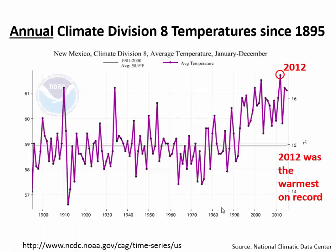What about temperatures? Here's a graph of the annual average temperatures in climate division eight since 1895. This graph starts from about 57 degrees and goes up to 61 degrees and a little higher. From 1895 all the way to 2015. On a year-to-year basis, the variability is just a few degrees on average. What should be apparent is an upward trend in average annual temperature, though there's still a lot of variability — with 2012 being the warmest on record.